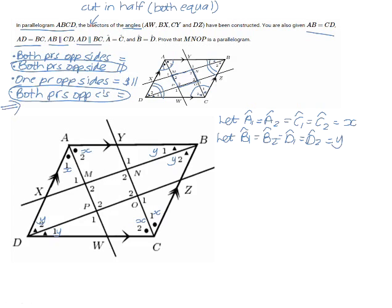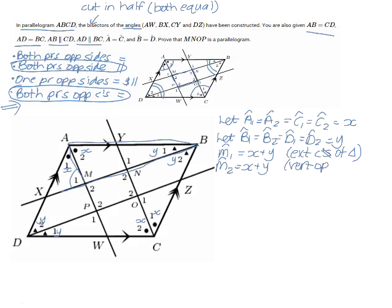We're going to try to prove that both pairs of opposite angles in MNOP are equal — specifically that M2 equals O2, and that N2 equals P2. Looking at M1, if I draw that triangle, we can see that M1 is the exterior angle of that triangle. So M1 equals the sum of the interior opposite angles, which is x plus y, because of the exterior angle of a triangle. M1 and M2 are vertically opposite angles, so M2 also equals x plus y.